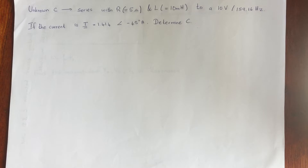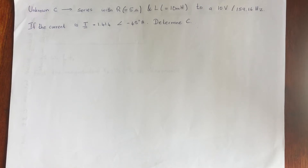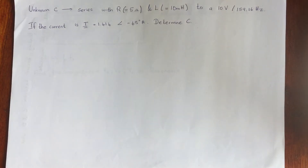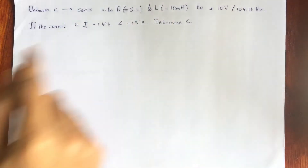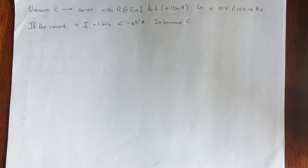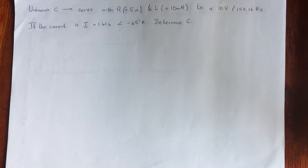Without wasting time, let's move to the question. In this question they have given a capacitor but the capacitance is unknown, and it has been connected in series with a resistor having 5 ohm resistance and an inductor having 10 micro henry inductance, connected to a 10 volt, 159.16 hertz source.